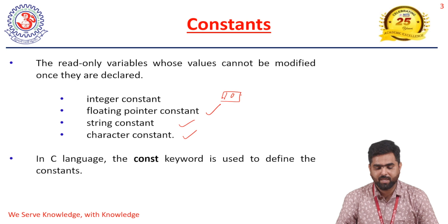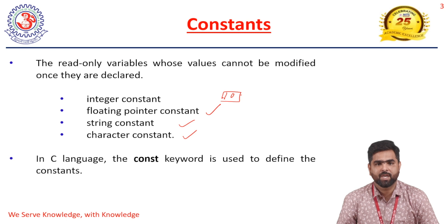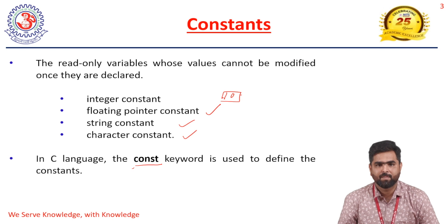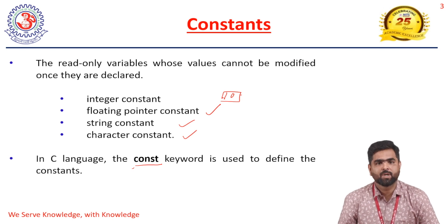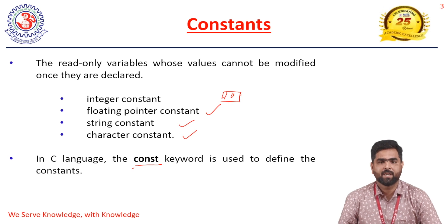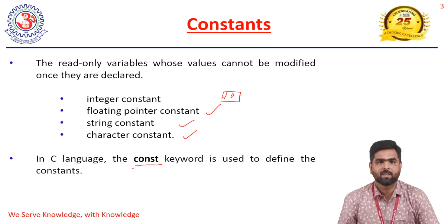To declare constant values in C language, we use a keyword called 'const'. How to declare the constant and what notations we need to follow will be studied in depth in upcoming lectures. For now, this is just a brief introduction to the constant.